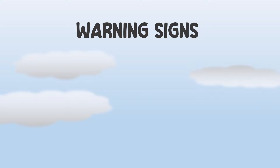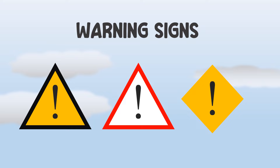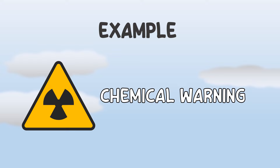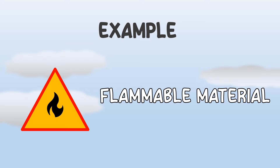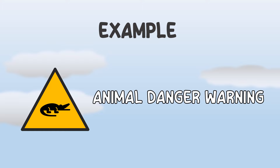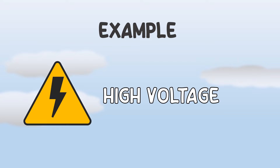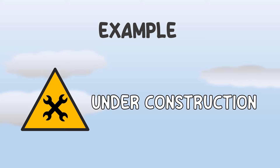Now, we will learn warning signs. A warning sign is a type of sign that indicates a potential obstacle, hazard, or condition that requires special attention. Warning signs have different shapes and background colors for each country. For example: chemical warning, flammable material, animal danger warning, high voltage warning, and under construction warning.